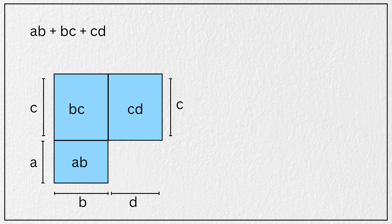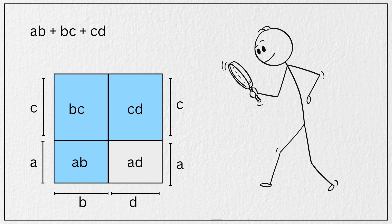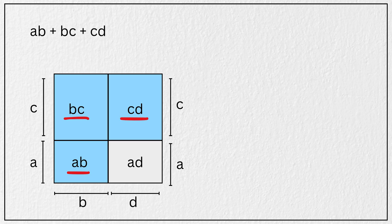Now just for fun, let's go ahead and complete a rectangle with area A times D. Now if you look closely, the blue shaded area, which includes A times B, B times C, and C times D,